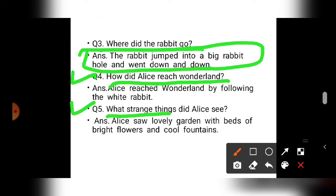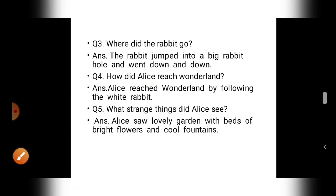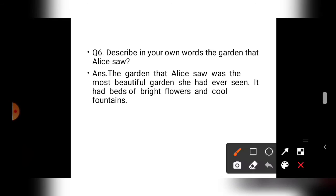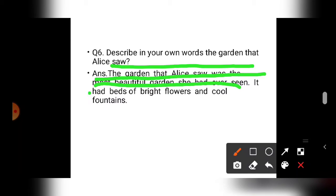Question number five: what strange things did Alice see? Alice saw a lovely garden with beds of bright flowers and cool fountains. Question number six: describe in your words the garden that Alice saw. The garden that Alice saw was the most beautiful garden she had ever seen. It had beds of bright flowers and cool fountains.